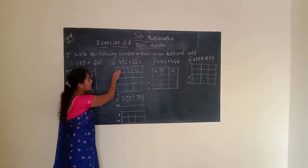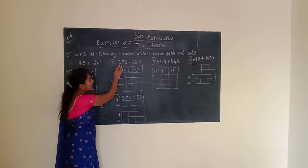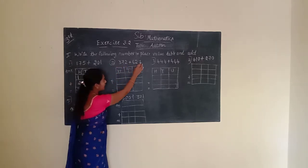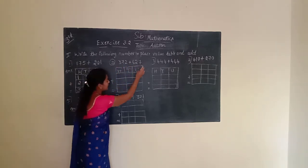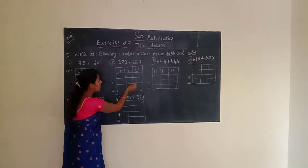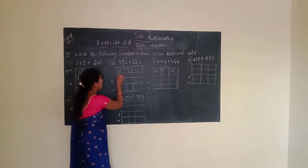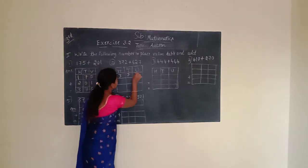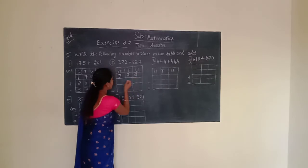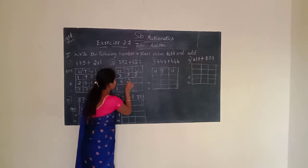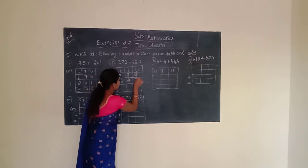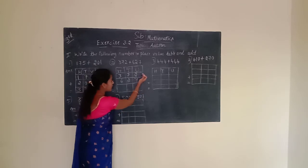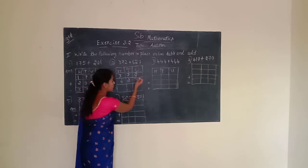Next, second question. The given number is 372 plus 627. Arrange this number in the place value chart — 372 plus 627. Now we have to start. First, we have to start from the unit place.